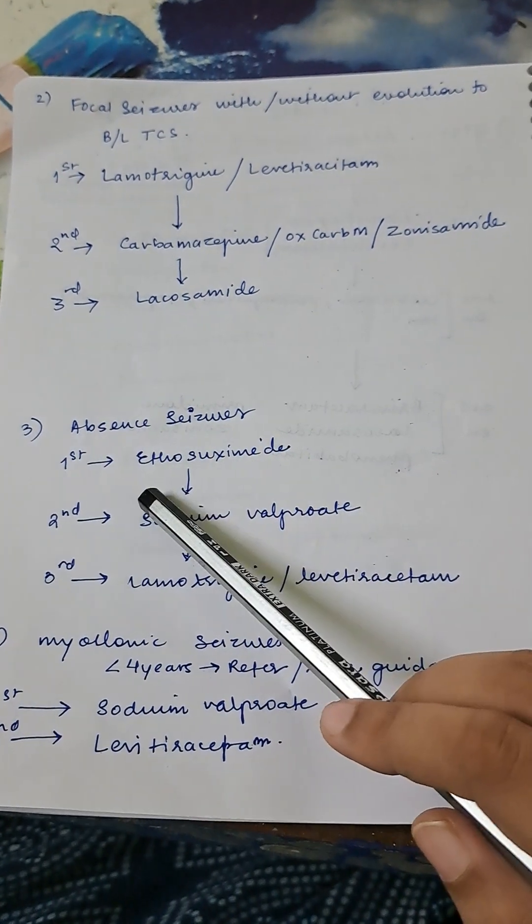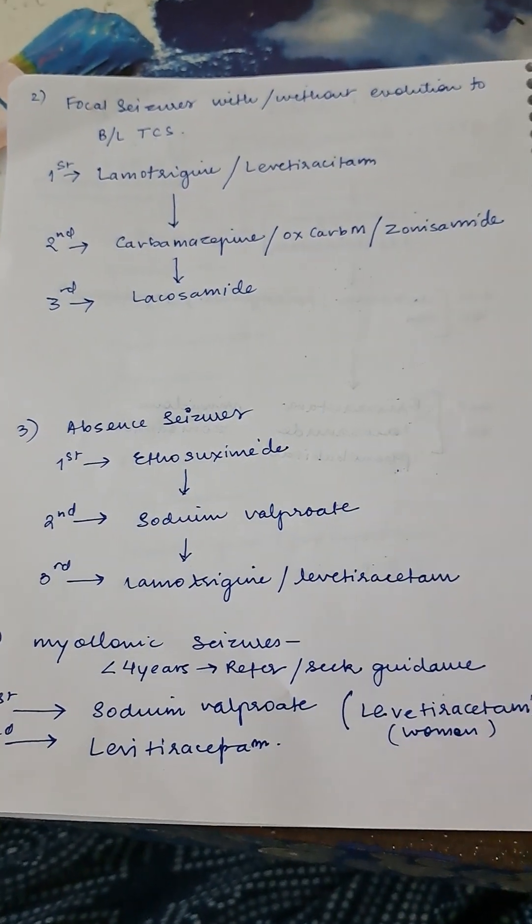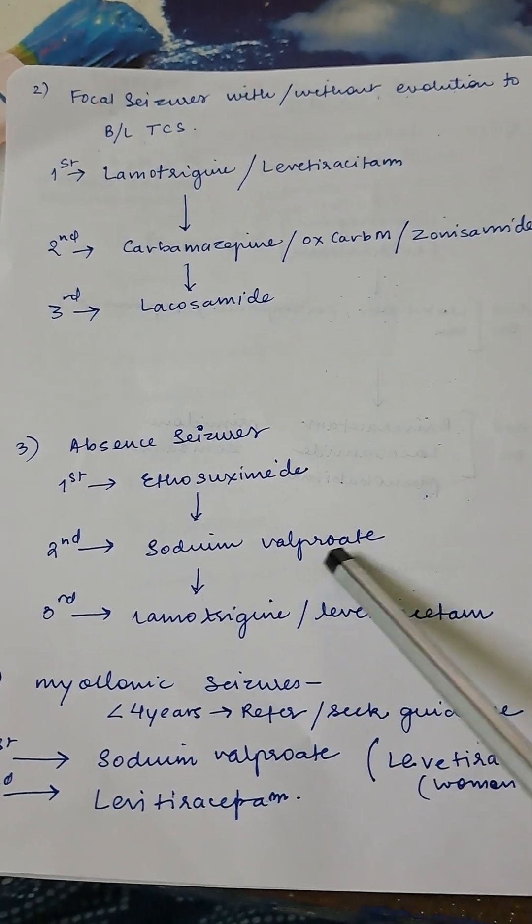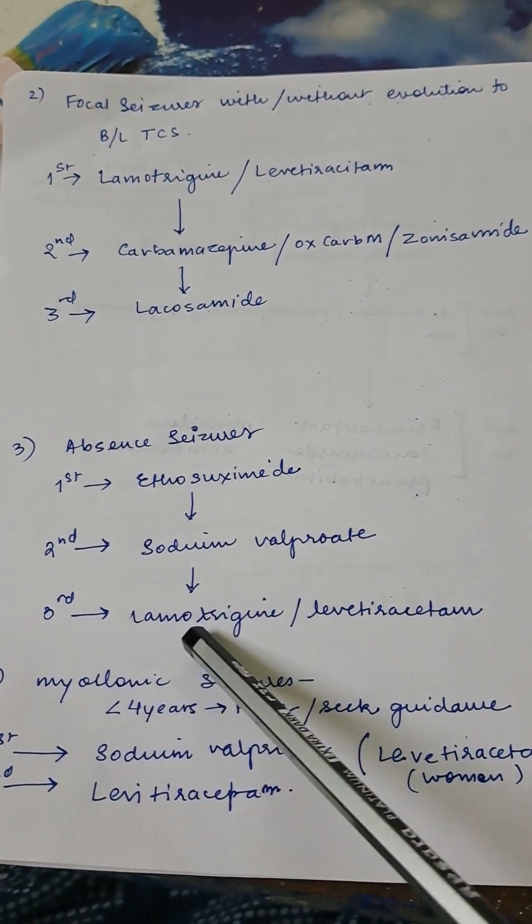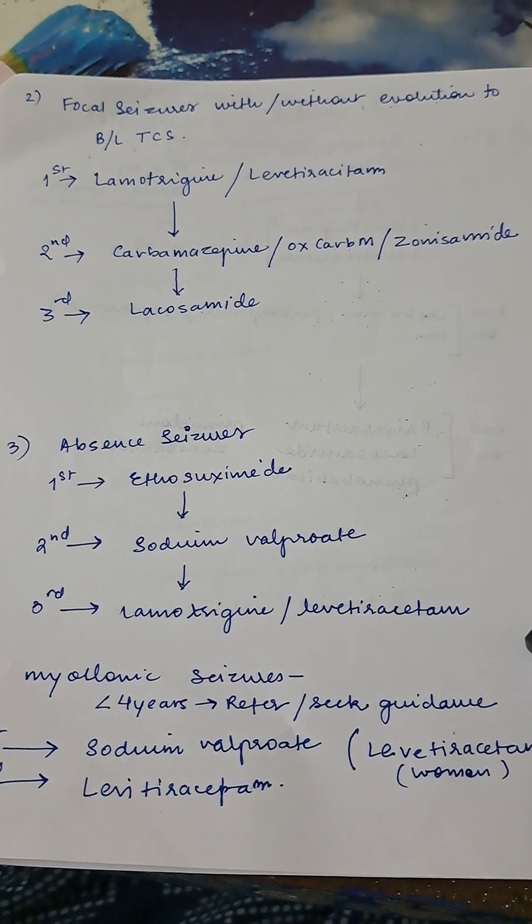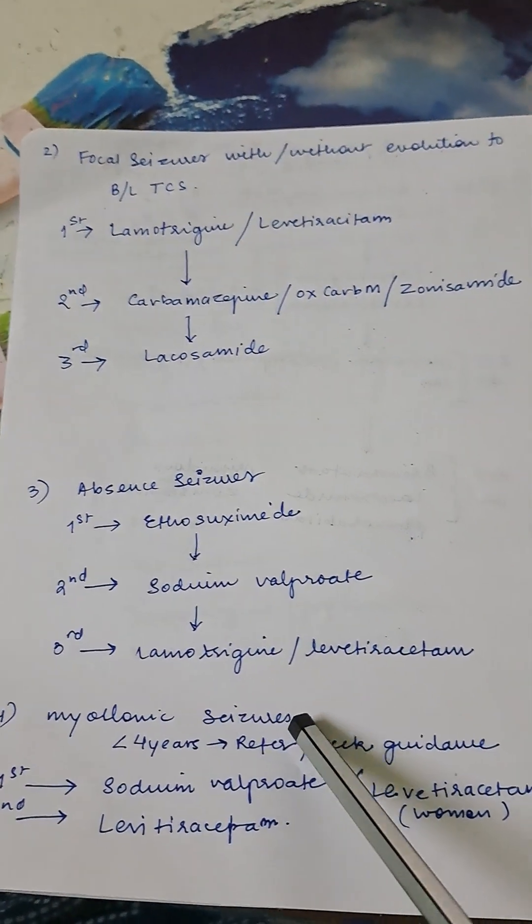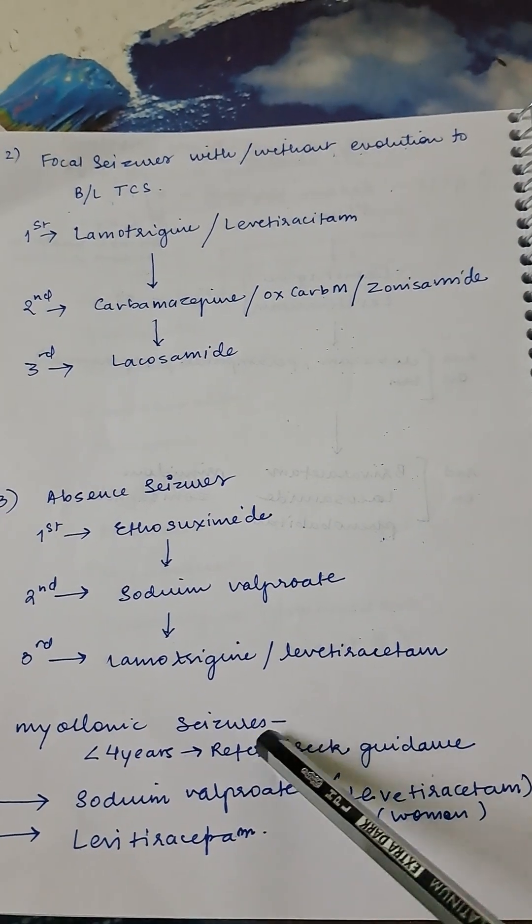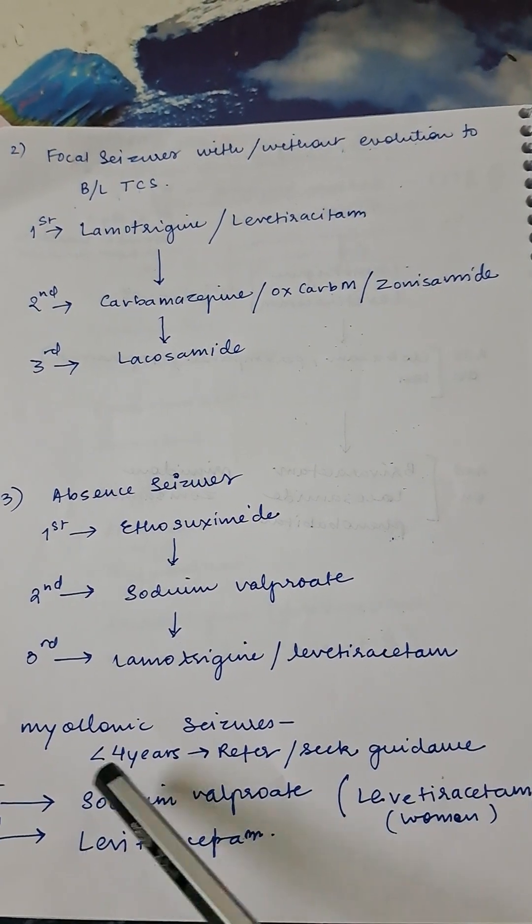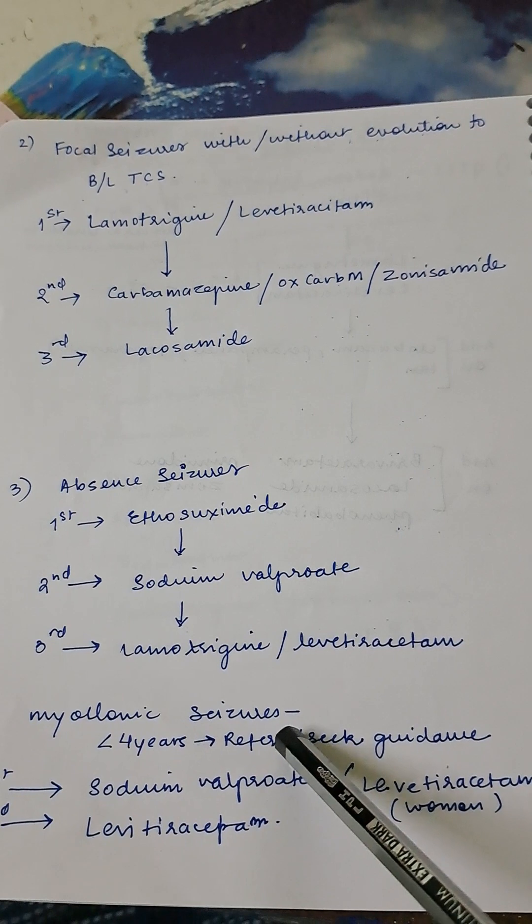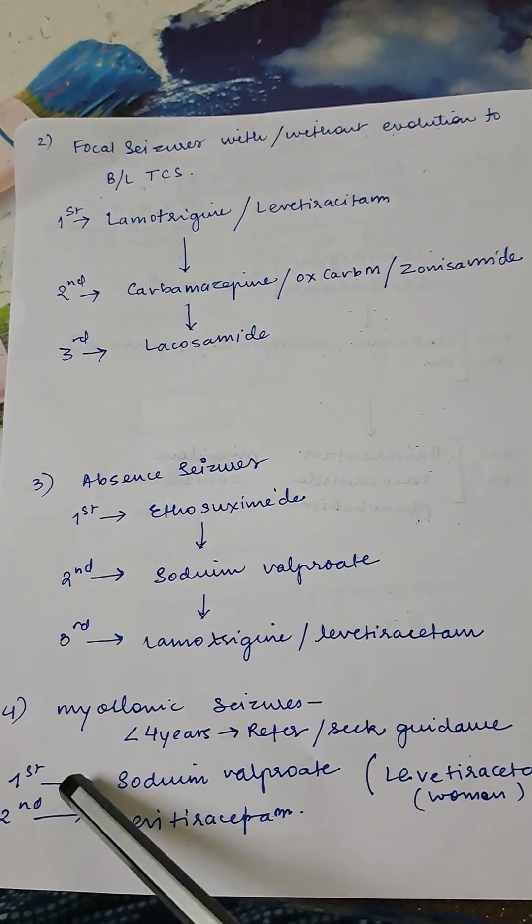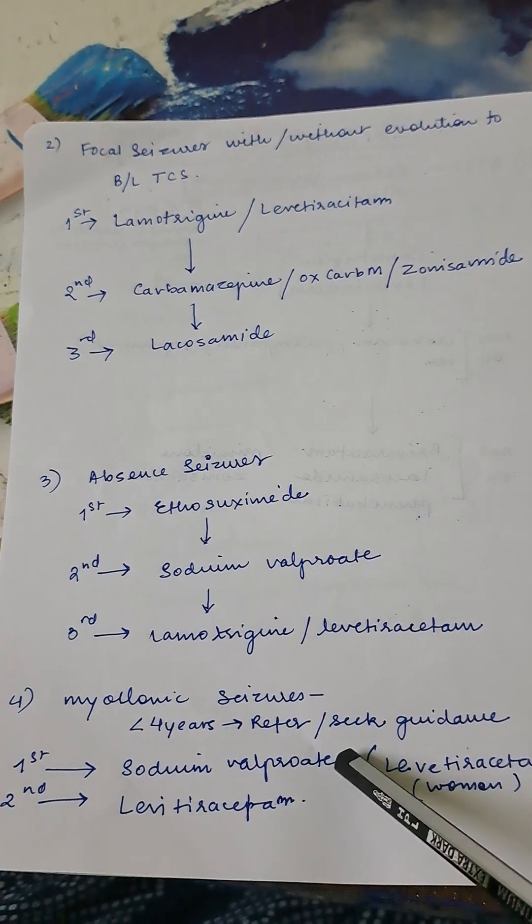Absence seizure: first line is ethosuximide in all cases, whether adult or pediatrics. Second line is sodium valproate. Third line will be lamotrigine or levetiracetam. Myoclonic seizures: if the patient is less than four years, refer or seek guidance. Take care—refers to some pediatrician neurologist or seek guidance from experts.